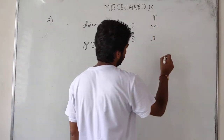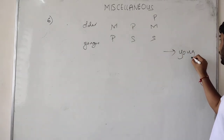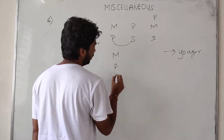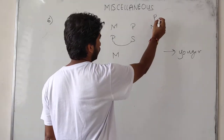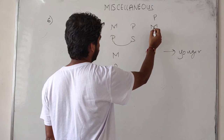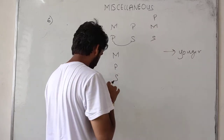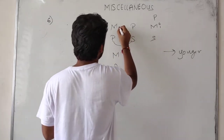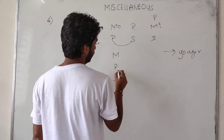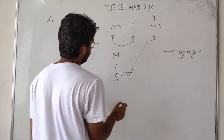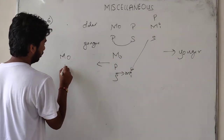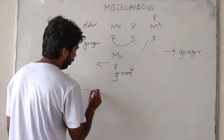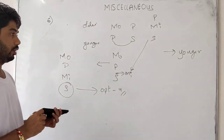If we mingle all the results together, we get the order: Mohan, Praveer, Meer, and Suresh. So Suresh is the youngest. Among the four, Suresh is the youngest, which is option number 4. Option 4 is the right answer.